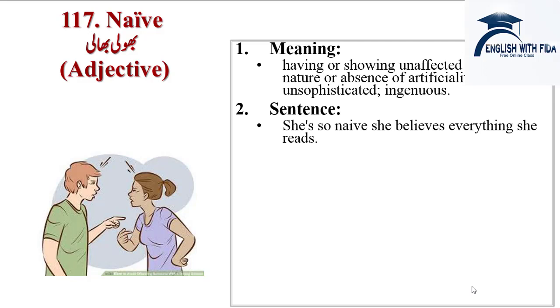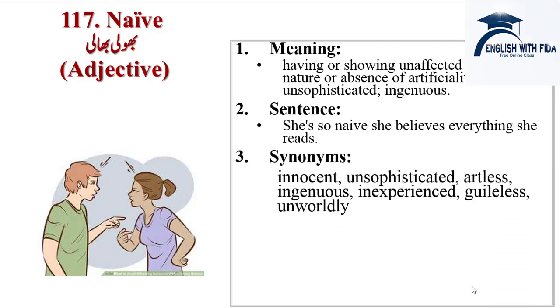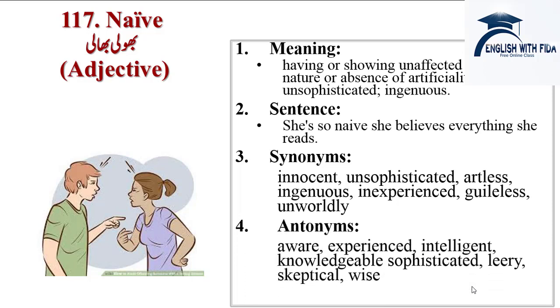Sentence: she is so naive that she believes everything she reads. Synonyms are innocent, unsophisticated, artless, ingenuous, inexperienced, guileless, unworldly. Antonyms are aware, experienced, intelligent, knowledgeable, sophisticated, leery, skeptical, wise.